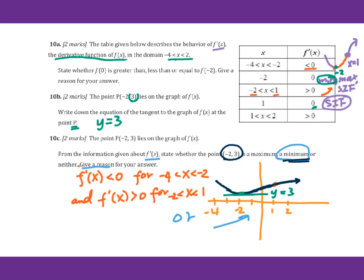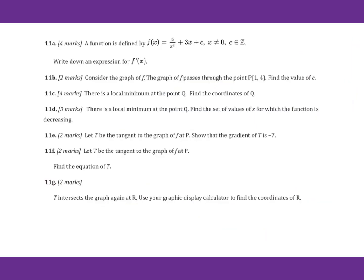For 10a, the reason you could also say: when x is between negative 2 and 1 the graph is increasing. Therefore you have f of 0 greater than f of negative 2. Or you could say from the given information f of negative 2 is a minimum point.